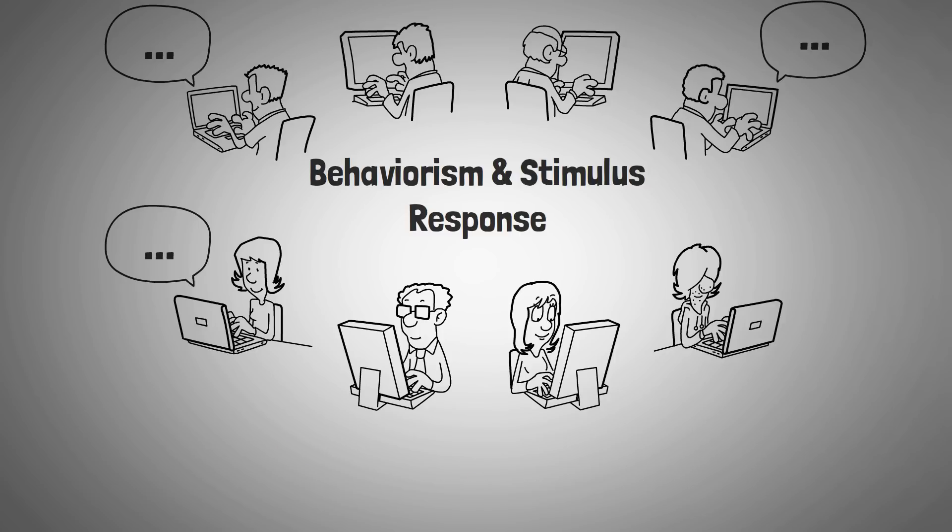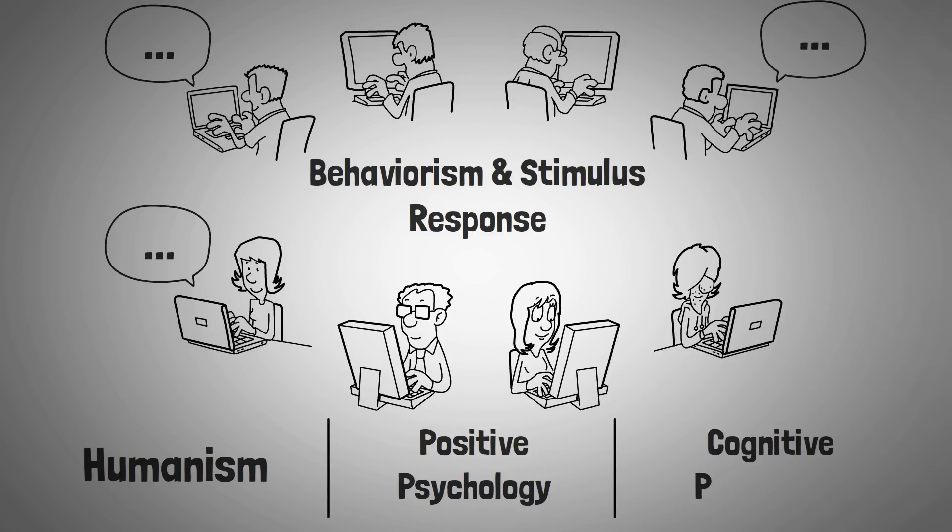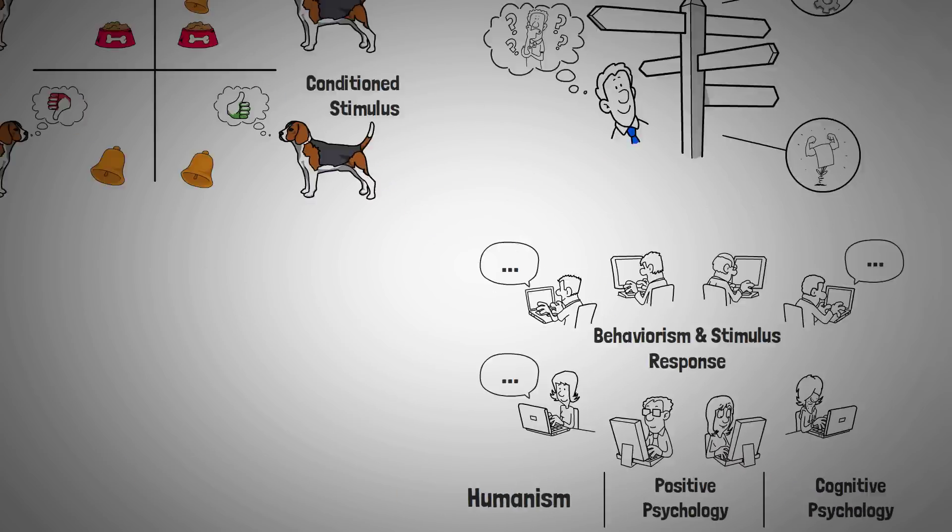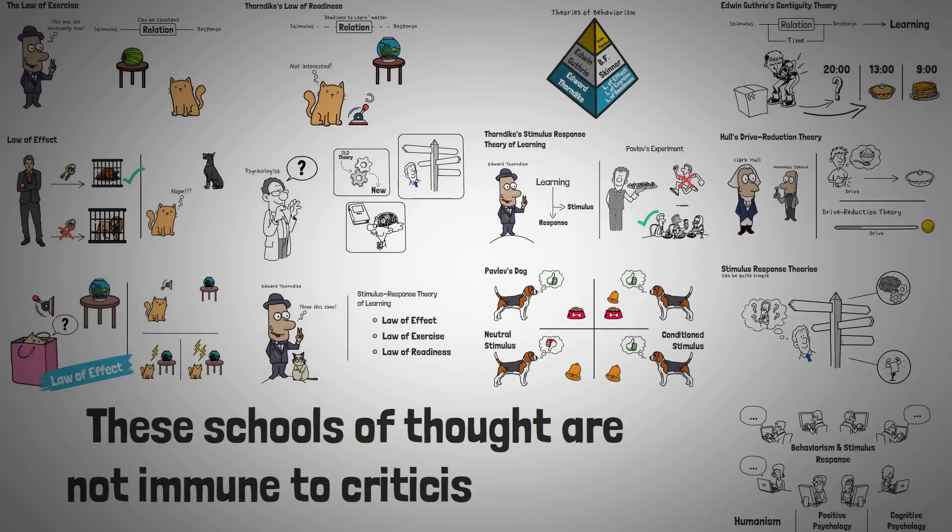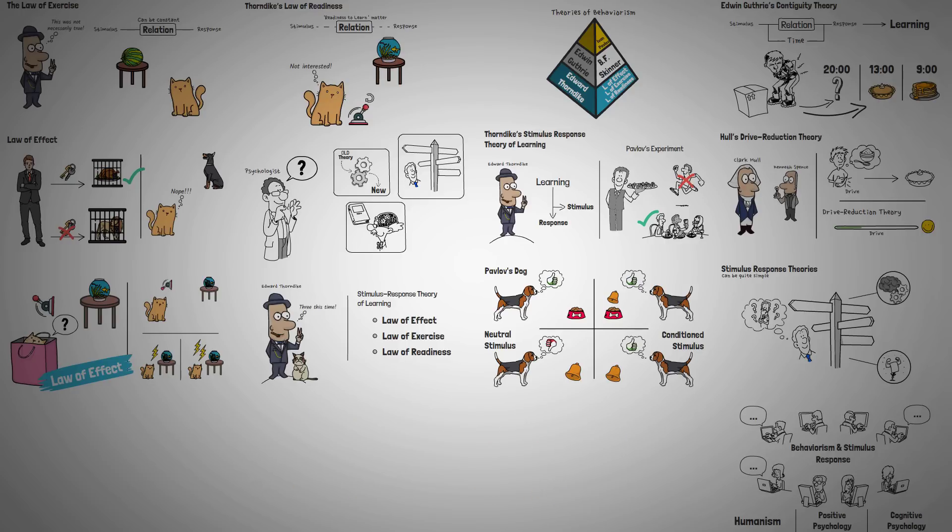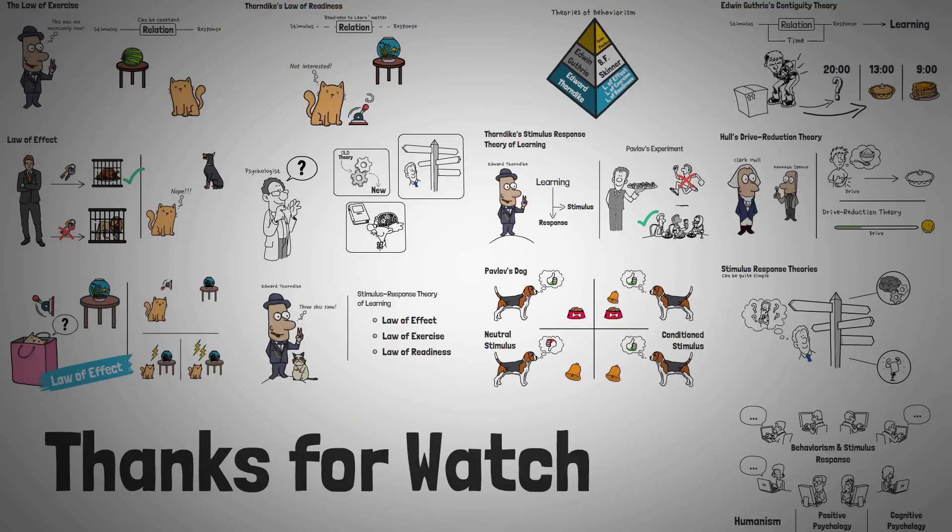As these questions were raised more and more frequently, schools of thought like humanism, positive psychology, and cognitive psychology were born. These schools of thought are not immune to criticism either, so completely replacing education on behaviorism with information on cognitive psychology is not necessarily the best approach. Although psychologists view behavior as more than just a stimulus and a response, we cannot forget the theories that built the foundation of what we know today.